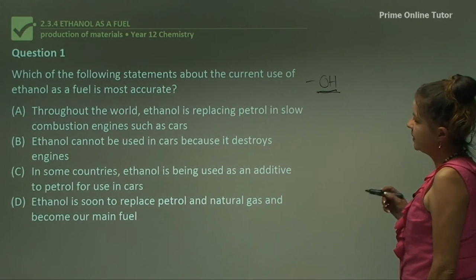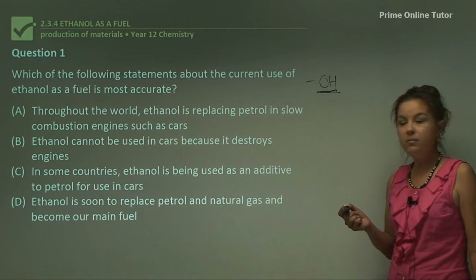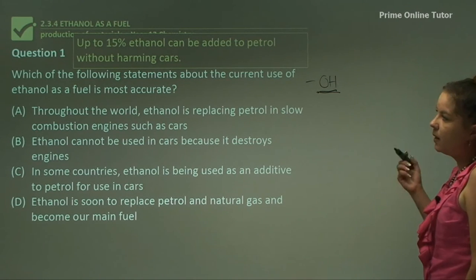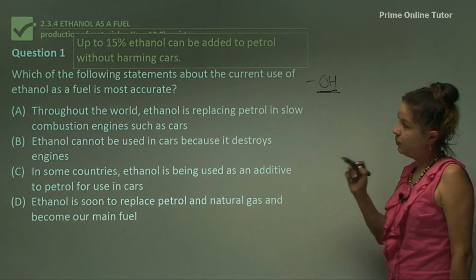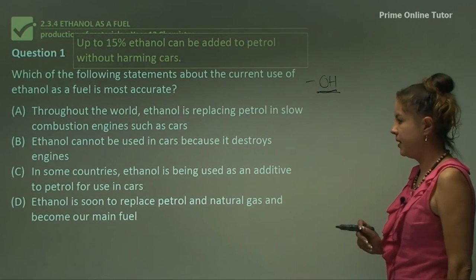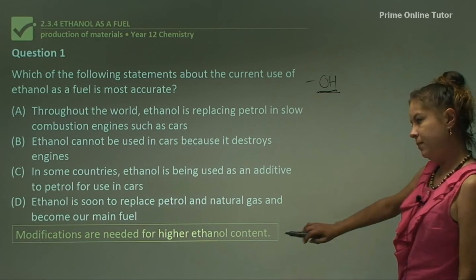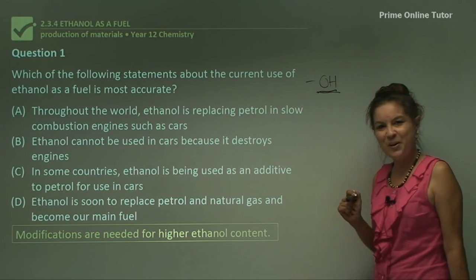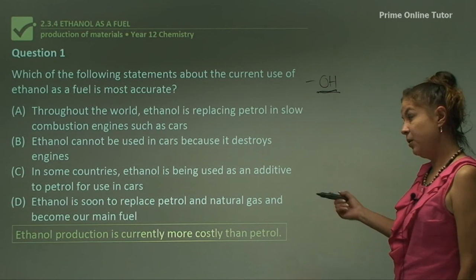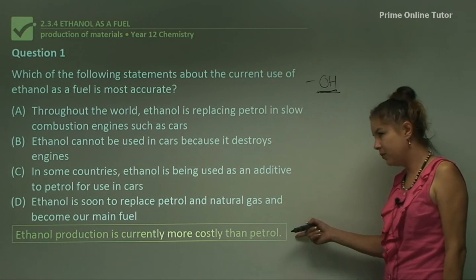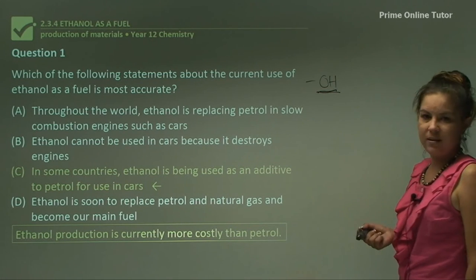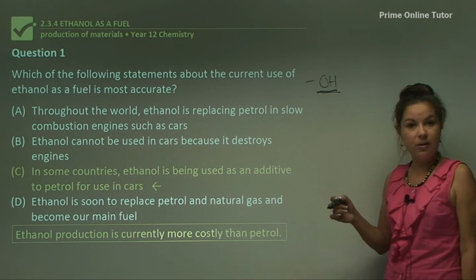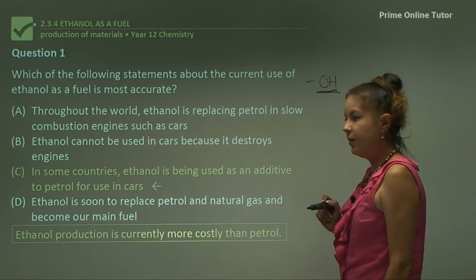Question 1: which of the following statements about the current use of ethanol as a fuel is most accurate? Up to 15% ethanol can be added to petrol without harming cars — 15% is the magic number. Above that, modifications are needed to the car, otherwise it will ruin engine parts. Ethanol production is currently more costly than petrol. The answer is: in some countries ethanol is being used as an additive, such as in Australia and the United States.